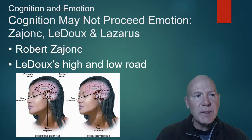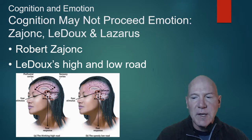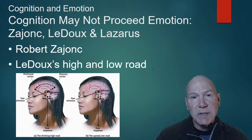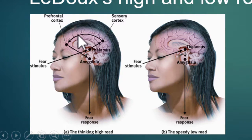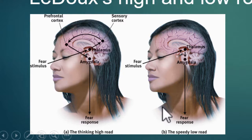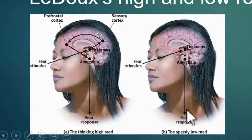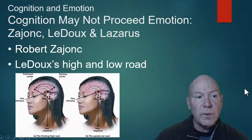Now we've put cognition into it. Zajonc, LeDoux, and Lazarus have taken this further, saying that sometimes we don't have cognitive appraisal of our emotions but a lot of times we do. What they looked at is basically top-down and bottom-up processing of emotion. A fear stimulus is sent to our thalamus; for a complex emotion like love, the thalamus sends it to our sensory cortex and prefrontal cortex where we can process the information and then get a fear response. For simpler emotions like anger or basic fear, the thalamus sends it right back down into our sympathetic nervous system. LeDoux calls this the high and the low road of emotional processing.